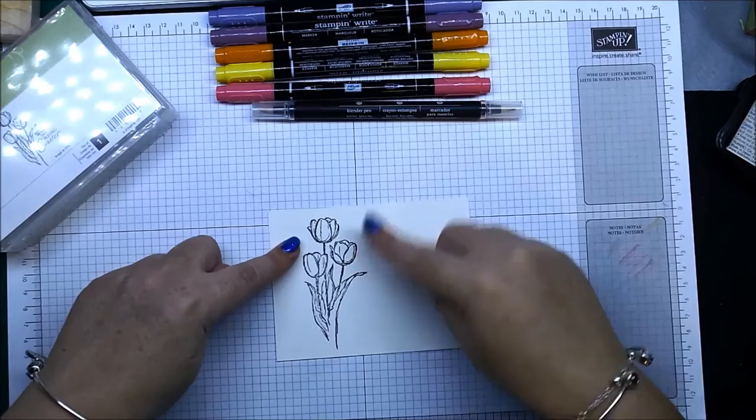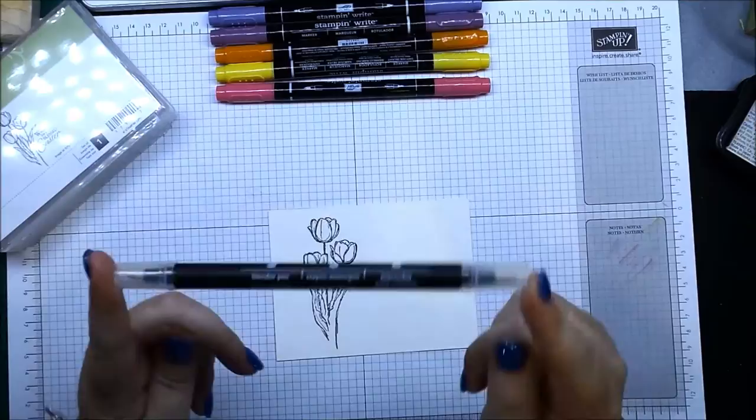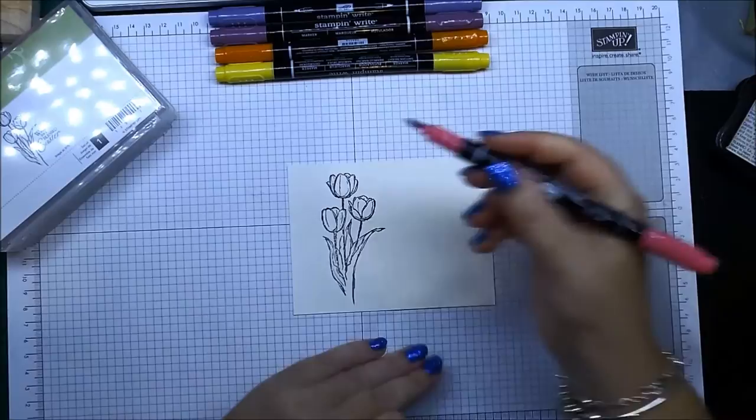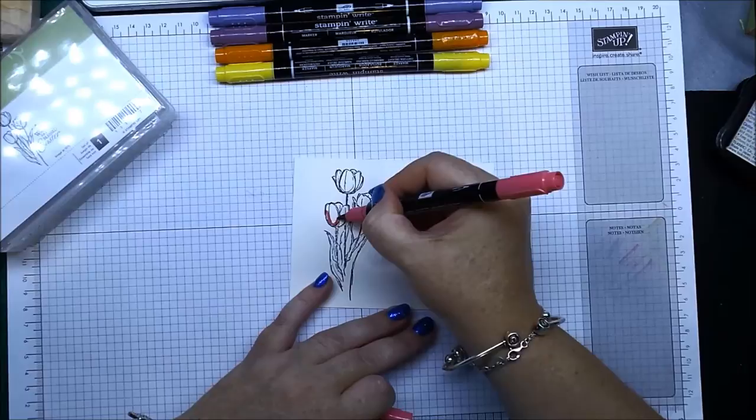Now to color in your tulips, you need an aqua painter. Yes, I said an aqua painter, not a blender pen. Anybody who knows me knows that I do not like blender pens, but I am using a blender pen for this technique. So just grab your marker, this is Strawberry Slush, and then we're just going to, not very neatly, just draw it around the edges there.